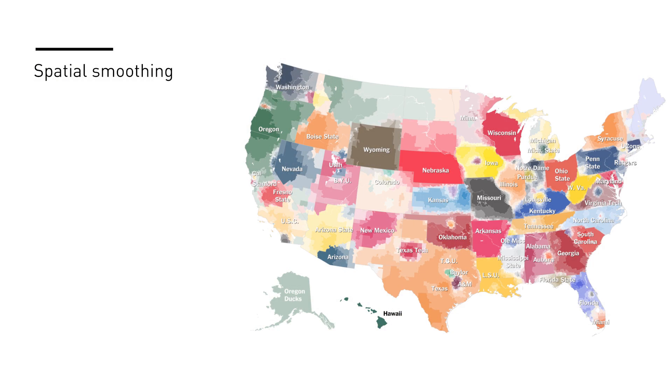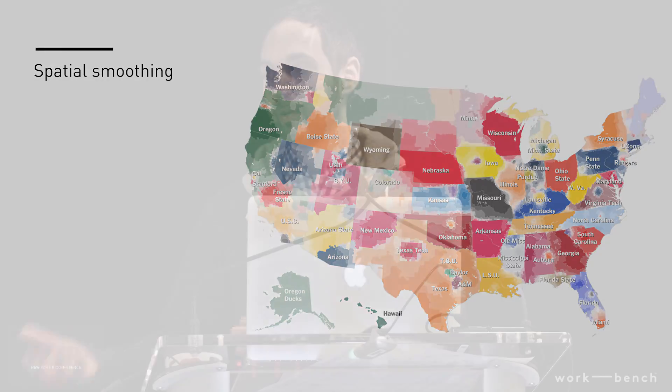The other thing — this was sort of the same idea as the Dialect Quiz. The Dialect Quiz was really an exercise in spatial smoothing. We had point data of survey responses and then smoothed it out to get a continuous gradient. We used the same idea to make this series of Facebook fan maps — based on which team pages people had liked and where they were from, we constructed maps of where different teams' fan bases were. This one was for college football.